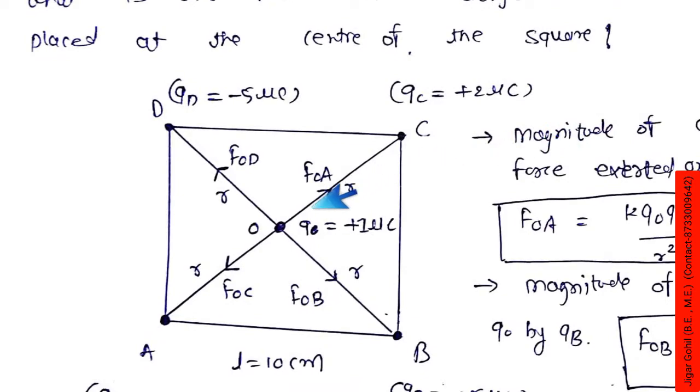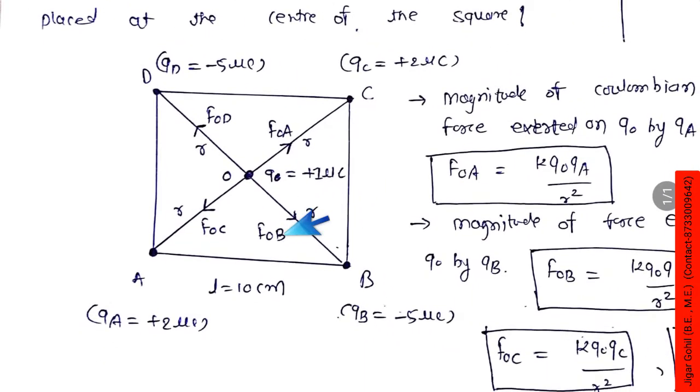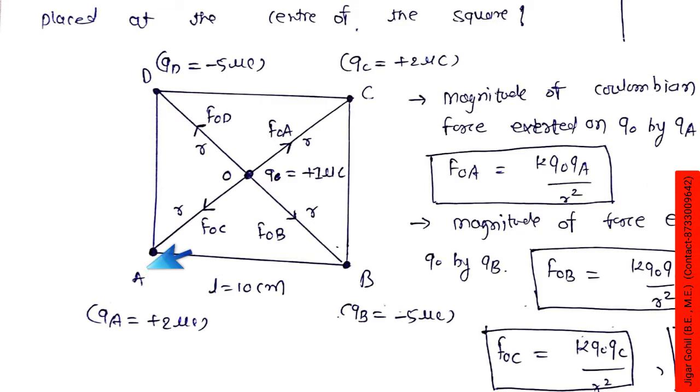So here at the center we have q0 charge which has been given the value of 1 microcoulomb. The total Coulombian force has to be found. First see this figure, here A, B, C, D points are there. At A we have placed this qa charge, qb, qc, and qd. Here at A there is a positive charge, at B and D there are negative charges of -5 microcoulomb, and at C there is +2 microcoulomb.